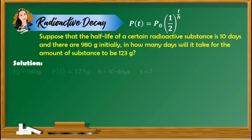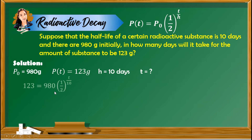Solving this problem, let us first list down the given values. P-sub-zero is 980 grams, P(T) is 123 grams, H is 10 days, and T is unknown. Substituting these values into our formula, we have 123 equals 980 times one-half raised to T over 10. Dividing both sides by 980, we get 0.125510204 equals one-half raised to T over 10.